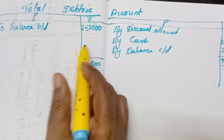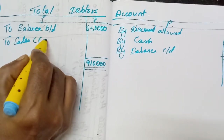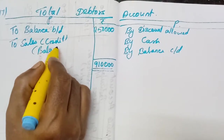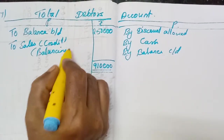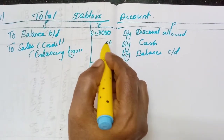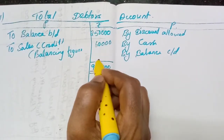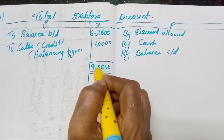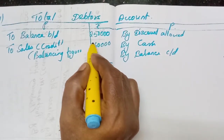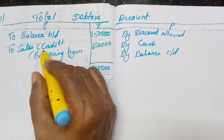Now we will balance. The balancing figure will be the sales — credit sales — on the debit side. Balancing the account: 9,10,000 minus (2,50,000 + 25,000 + 5,35,000 + 3,50,000) ... calculating: 6,60,000 is the credit sales.